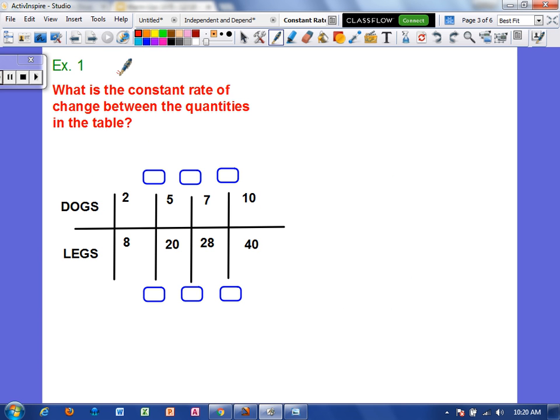So let's do some examples together. Alright, example one. What is the constant rate of change between the quantities in the table? So here we have the number of dogs and the number of legs that those dogs would have. So the number of legs is going to depend on how many dogs you have. So dogs would have to be independent. So dogs would be x, and the number of legs would be y.